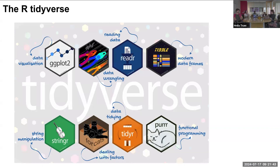I applied the Tidyverse ecosystem throughout this project, using many libraries such as ggplot2 for data visualization, dplyr for data wrangling, as well as string manipulation for regular expressions, and forcats for factors. I also used purrr's map functions instead of for-loops as much as possible, which made the code cleaner and easier for others to read.